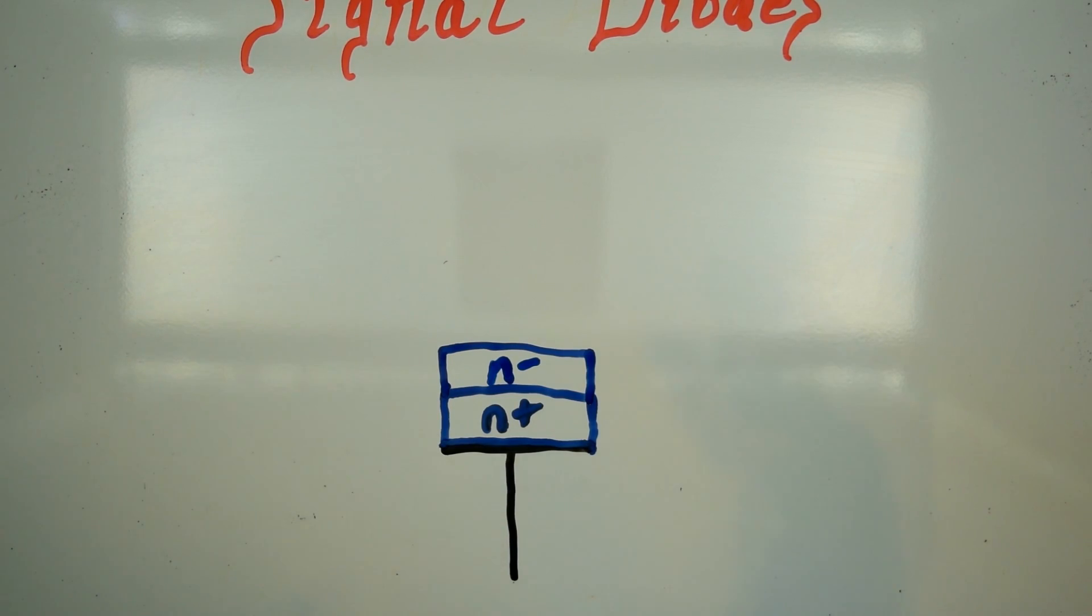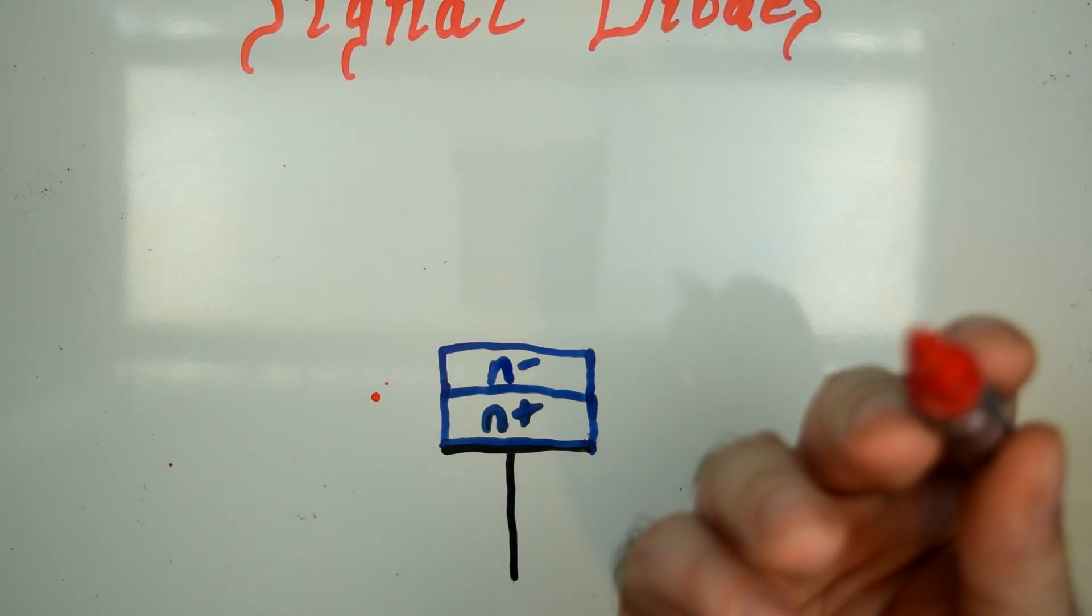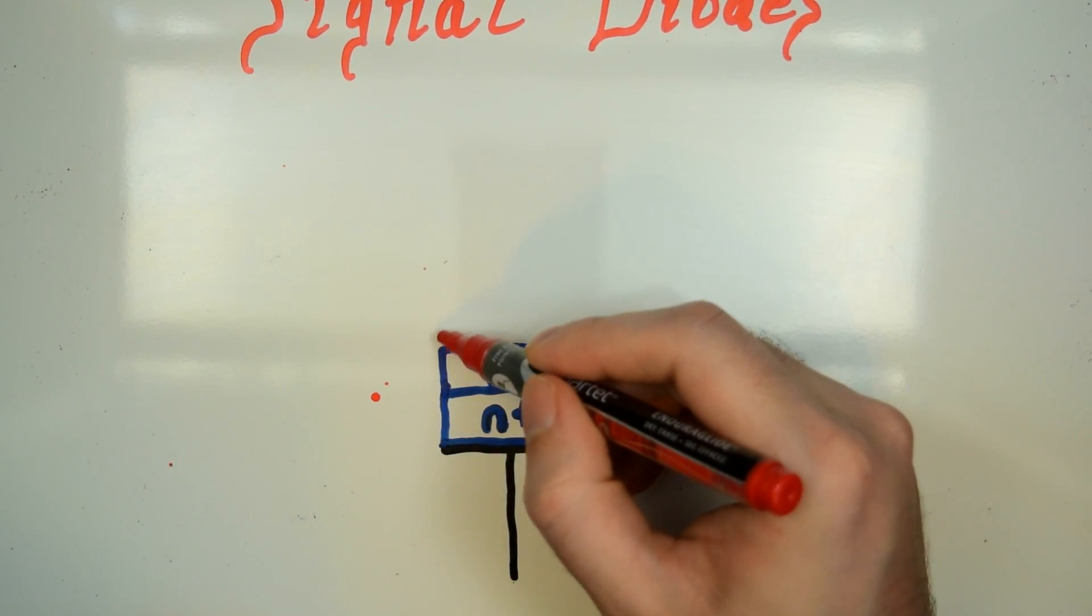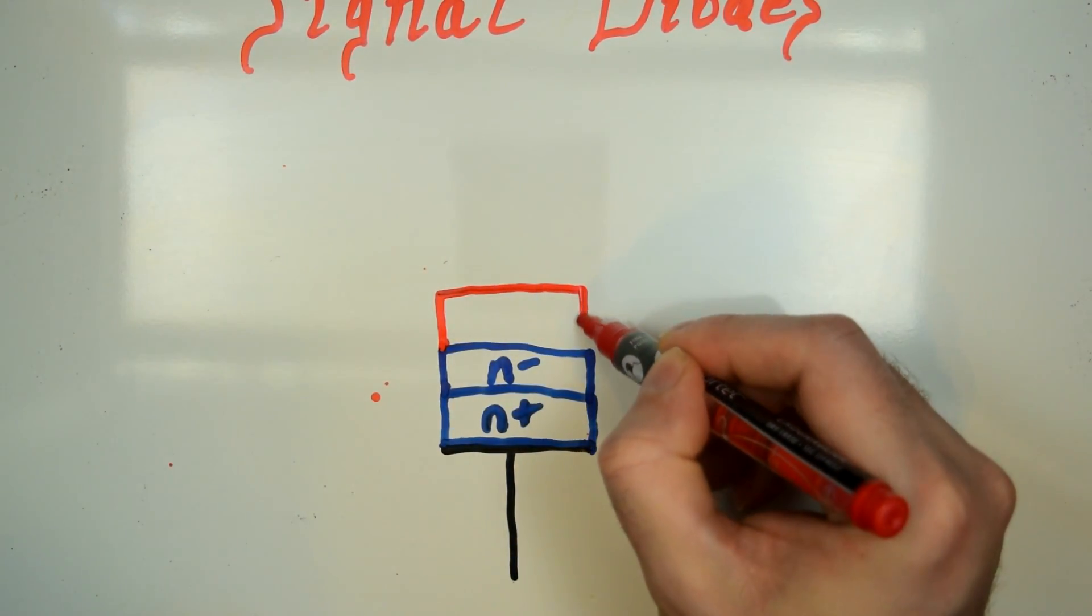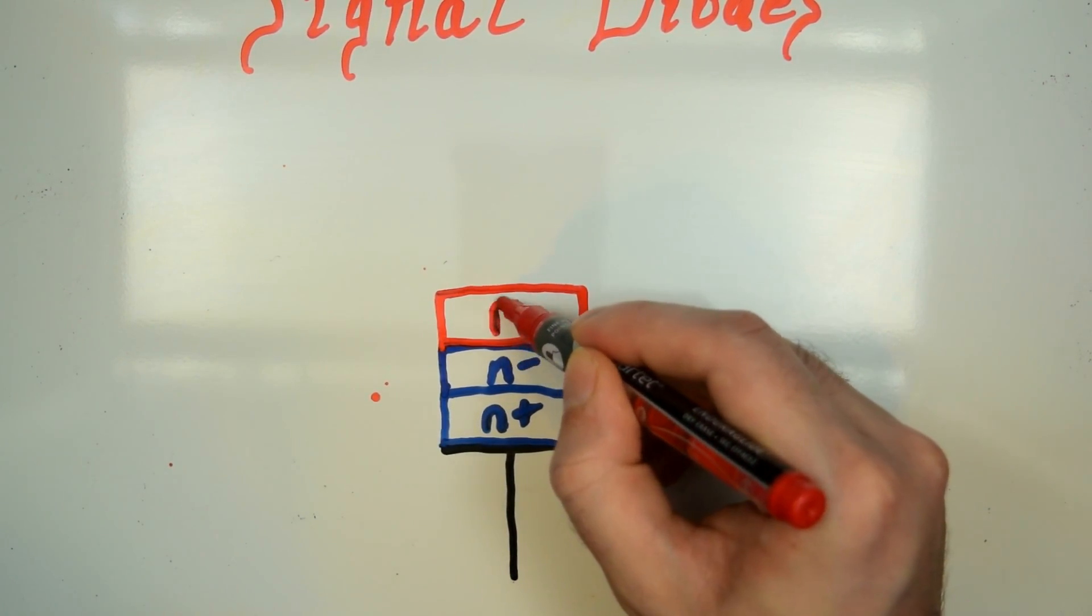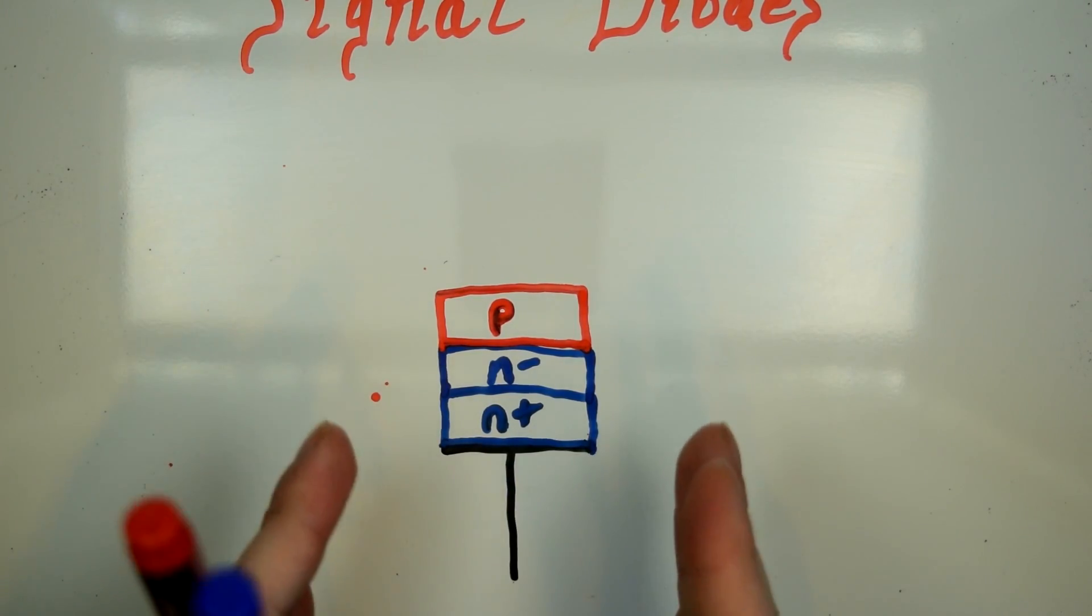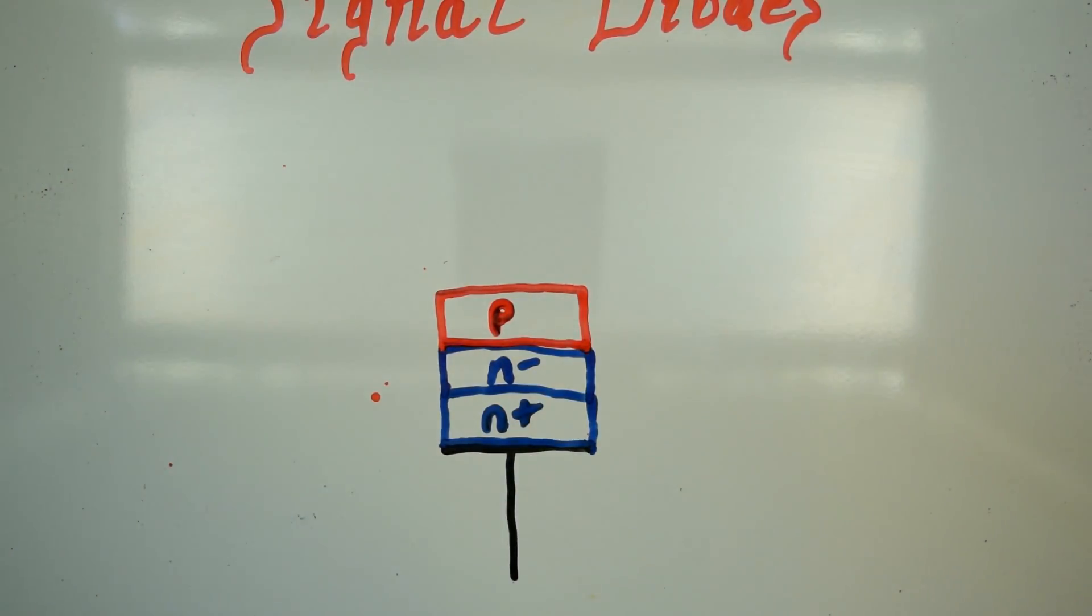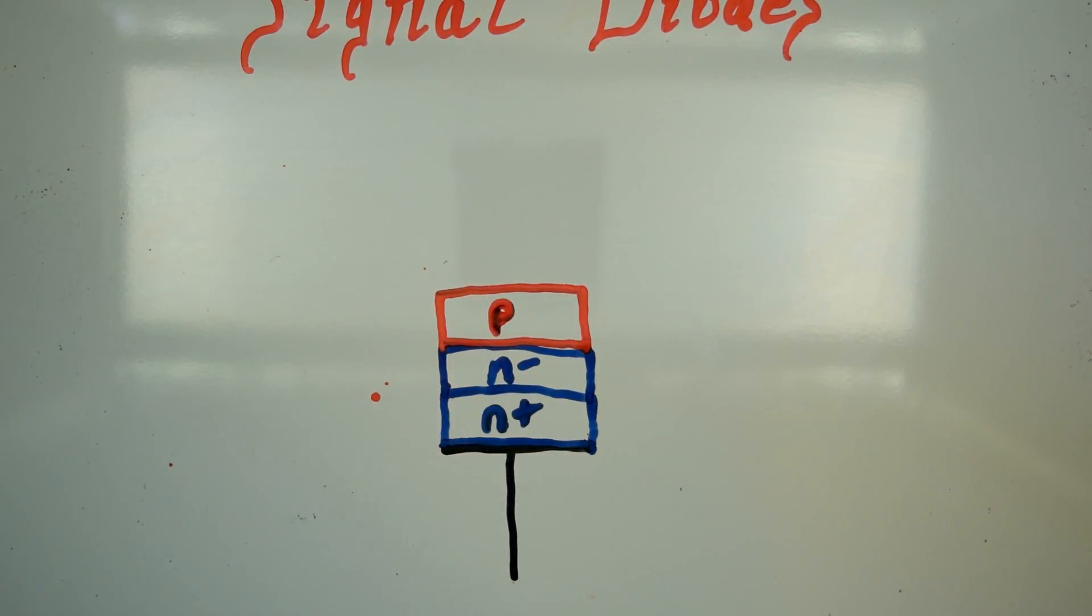All right, and then on top of that we're going to have a section of p-type material. Now it doesn't stop here. Once they've built that series of layers of semiconductor material, they then etch off a section of the diode like this to form what is called a mesa.